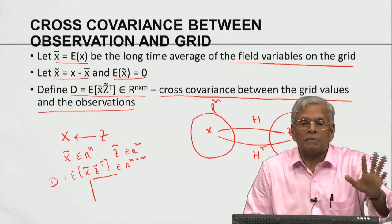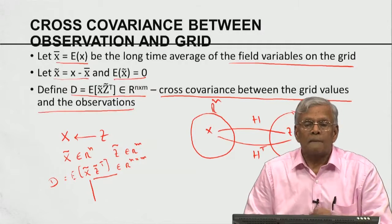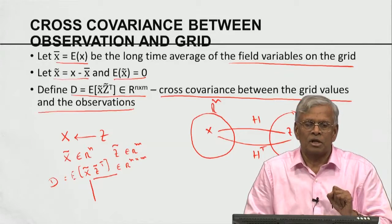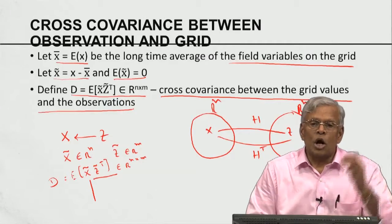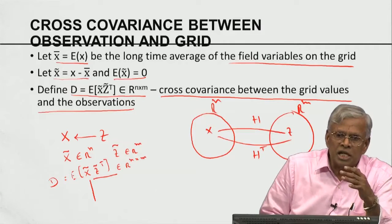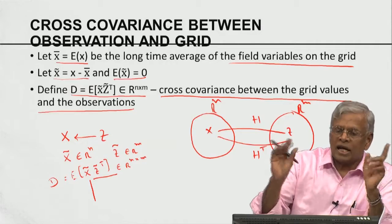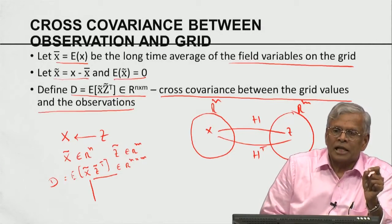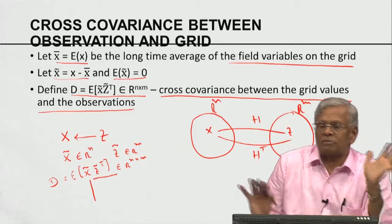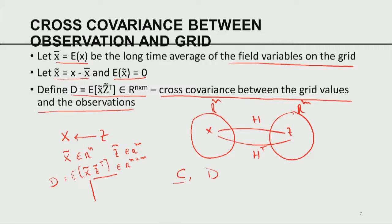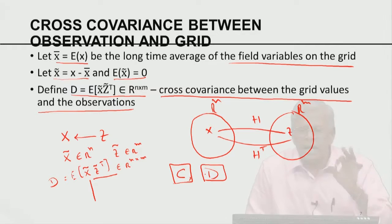C and D are going to play a very major role in our analysis. C may be fixed in time because once we establish an observation network, we cannot change it. But D can change in time because the computational grid can change — n can change in time, therefore D can change. C is the covariance of the field variable at the observation locations; D is the cross covariance between the grid and the observation network.